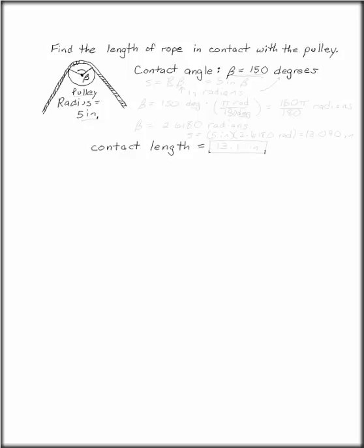Find the length of rope in contact with the pulley. We have a pulley with a radius of 5 inches and a contact angle of beta is 150 degrees.